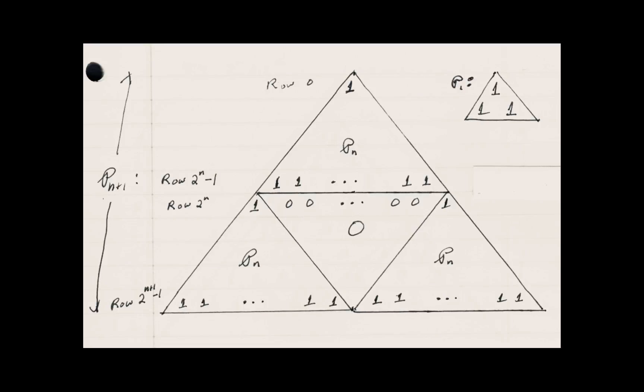then if you look at p_(n+1), all the rows from row 2^n to 2^(n+1) - 1 are just going to have double the number of ones as p_n. And 2 times a power of 2 is a power of 2, and there you are.